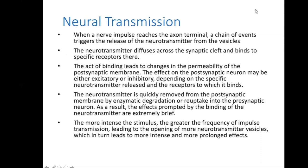I'll go through this quickly just to remind ourselves what happens. When a nerve impulse reaches the axon terminal, a chain of events occurs at the axon terminal and at the neuromuscular junction. When the nerve impulse comes, the neurotransmitters stored at the end of the nerves are synthesized and released.